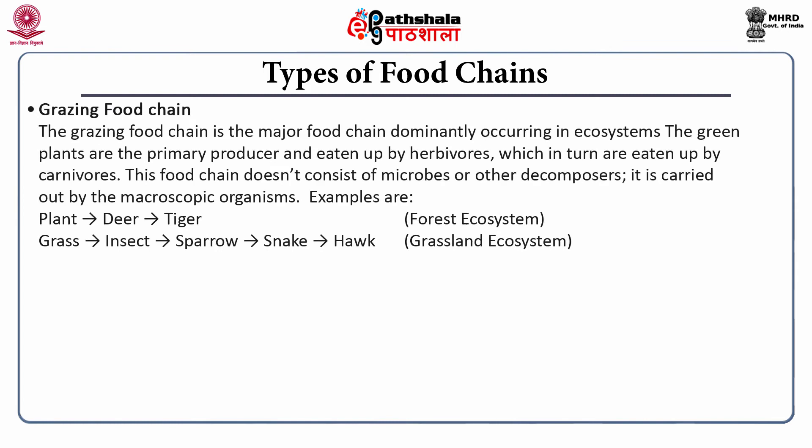Let us discuss different types of food chains, starting with the grazing food chain. The grazing food chain is the major food chain dominantly occurring in ecosystems. Green plants are the primary producer and are eaten up by herbivores, which in turn are eaten up by carnivores. This food chain does not consist of microbes or decomposers; it is carried out by macroscopic organisms. For example, in a forest ecosystem: plants are eaten by deer and deer by tiger. In a grassland ecosystem: grass is eaten by insects, then insects by sparrows, then birds by snakes, and snakes by hawks.